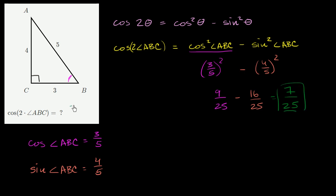So this equals negative 7 over 25 — got to be careful there, 16 is larger than 9, so the result is negative 7 over 25.